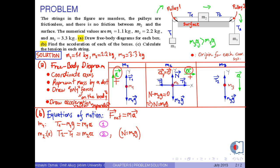Finally, for mass M3, we choose the direction of the acceleration vector as positive. Then, the net force is written to be M3 times G minus T2, which is equal to M3 times A by the Newton's second law.